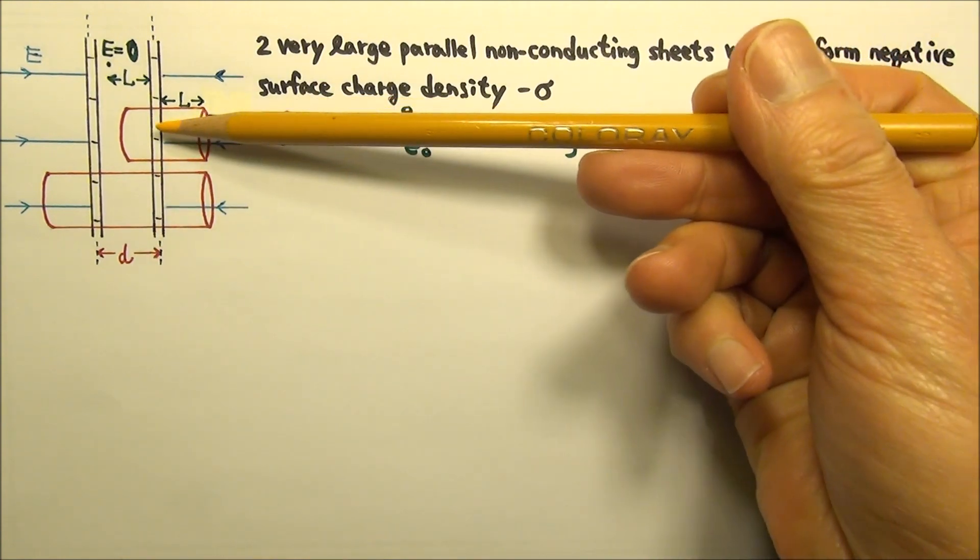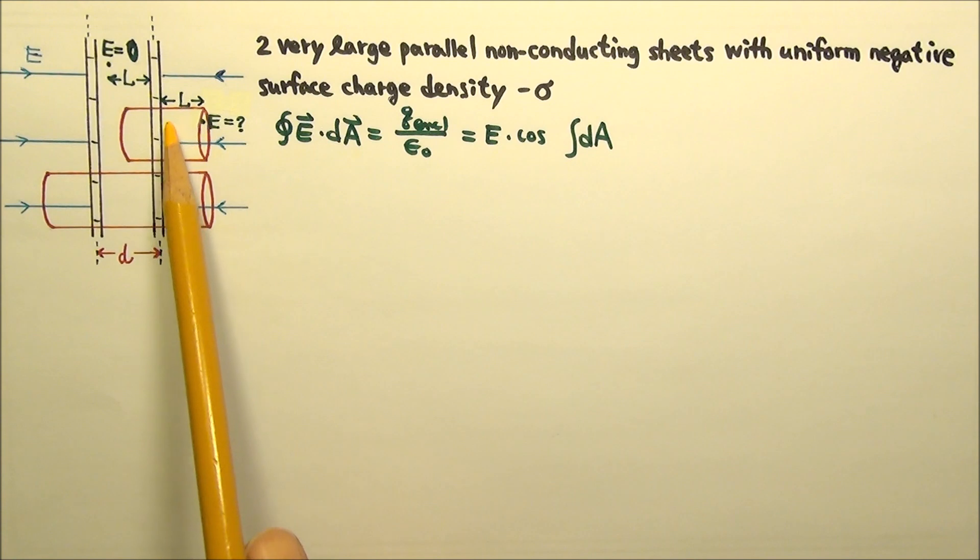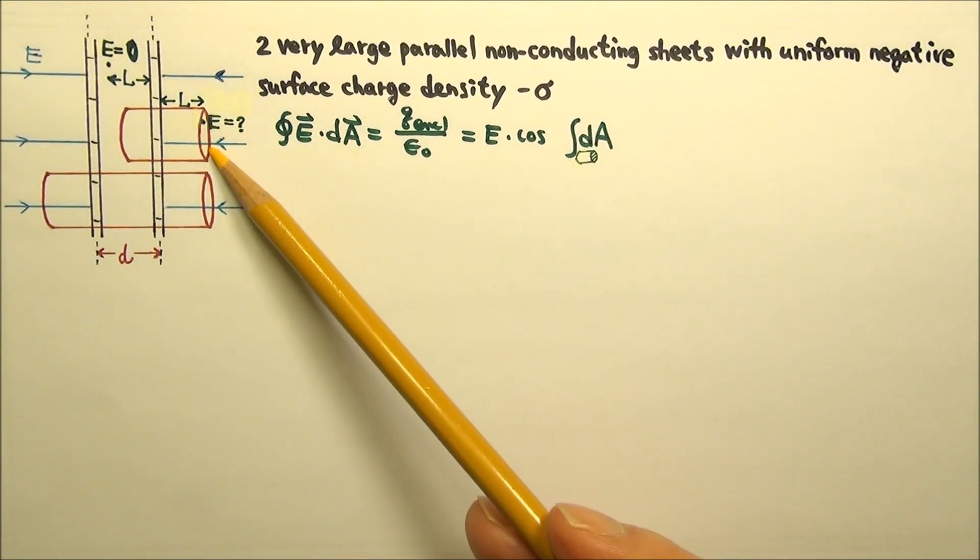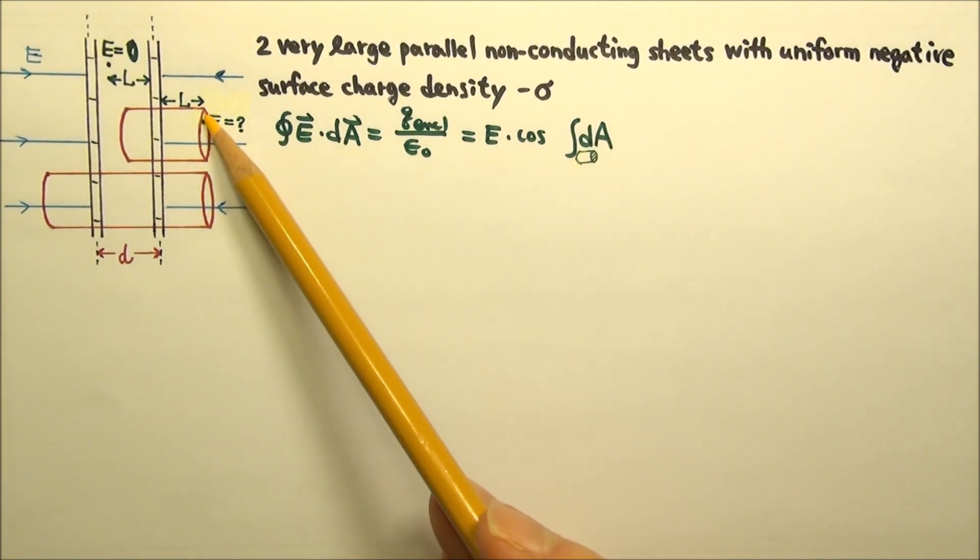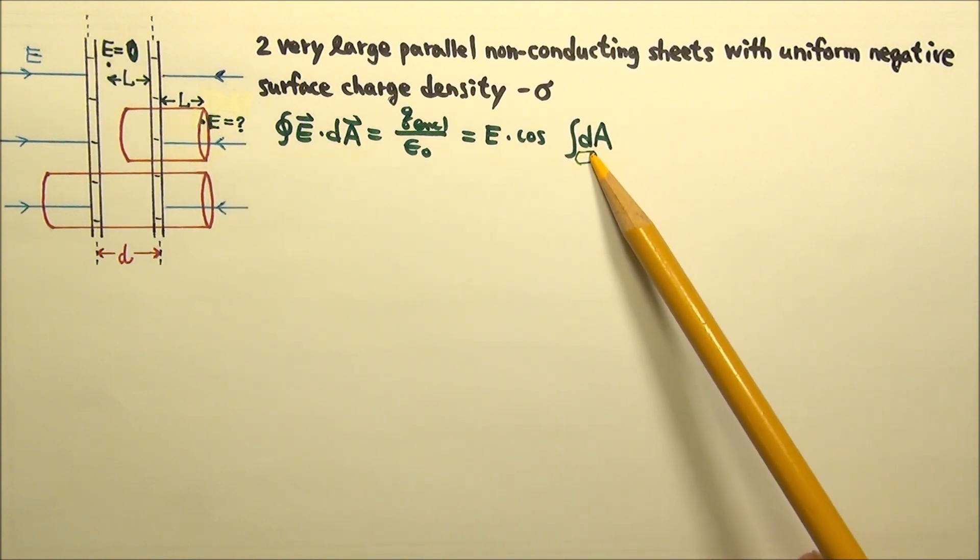There is no flux through the curved part of the cylinder either, because the field lines are all parallel to this curved part, and no field lines go through this curved part. So the only part of the Gaussian surface with non-zero flux is the right end of the cylinder.